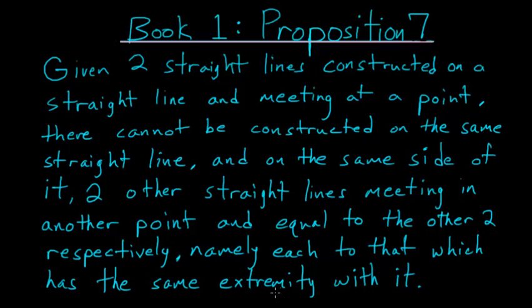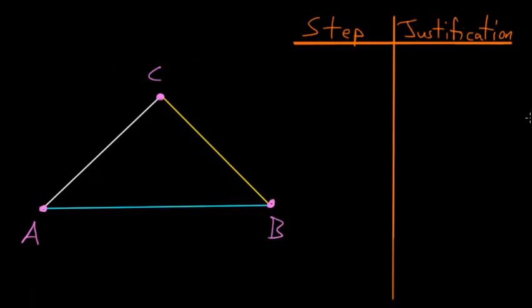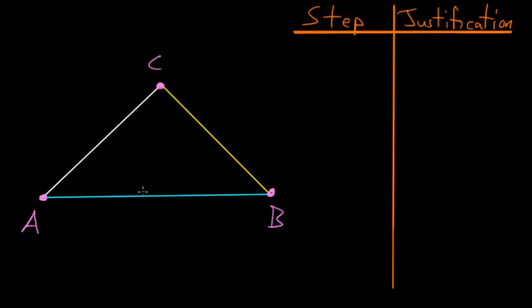If you haven't seen the word extremity before, it's essentially just a point. What this is saying is that if we have a triangle where the base is AB and we have these two lines coming off of it, AC and CB, these two lines can only meet in one point. In other words, these two lines would not be able to meet at some other point, say D here.